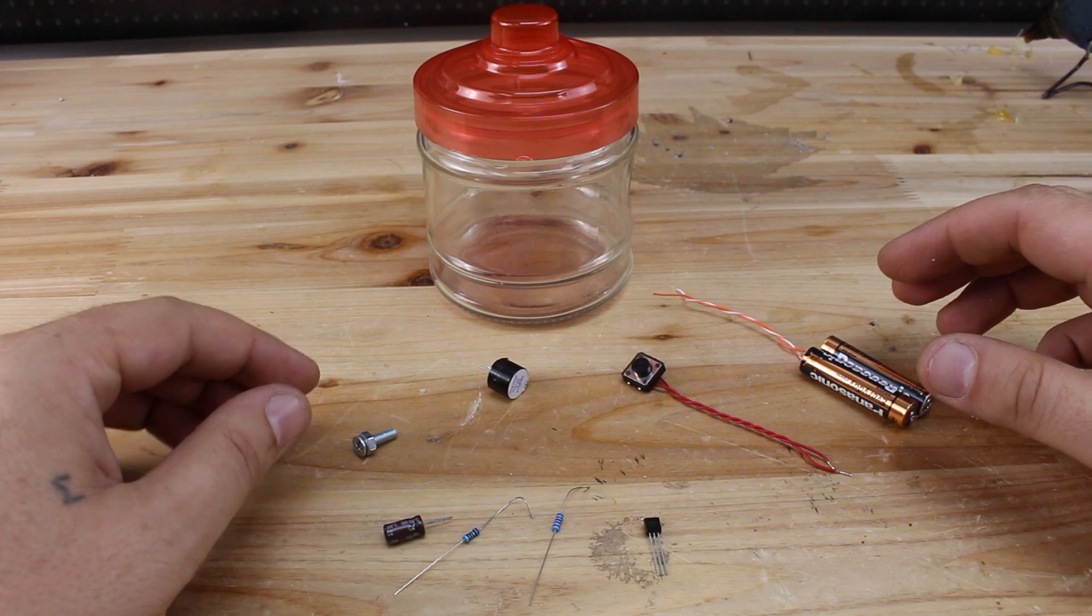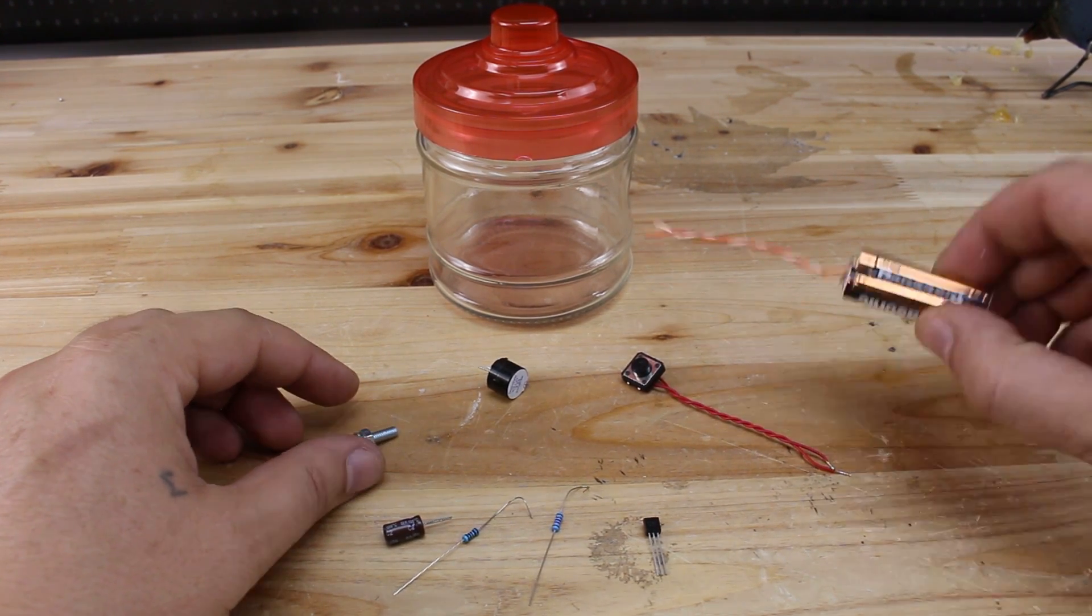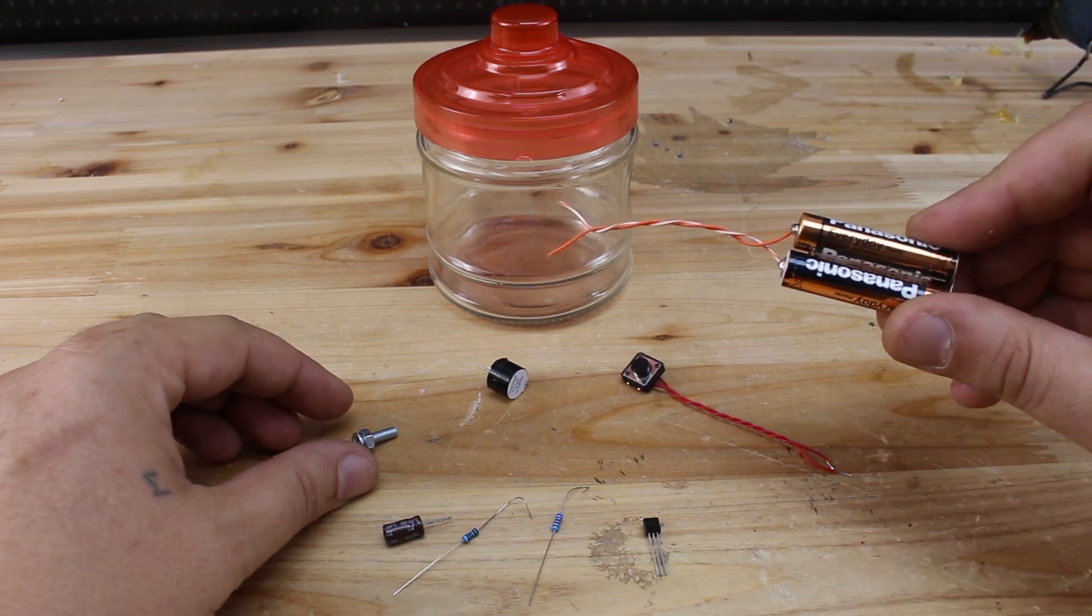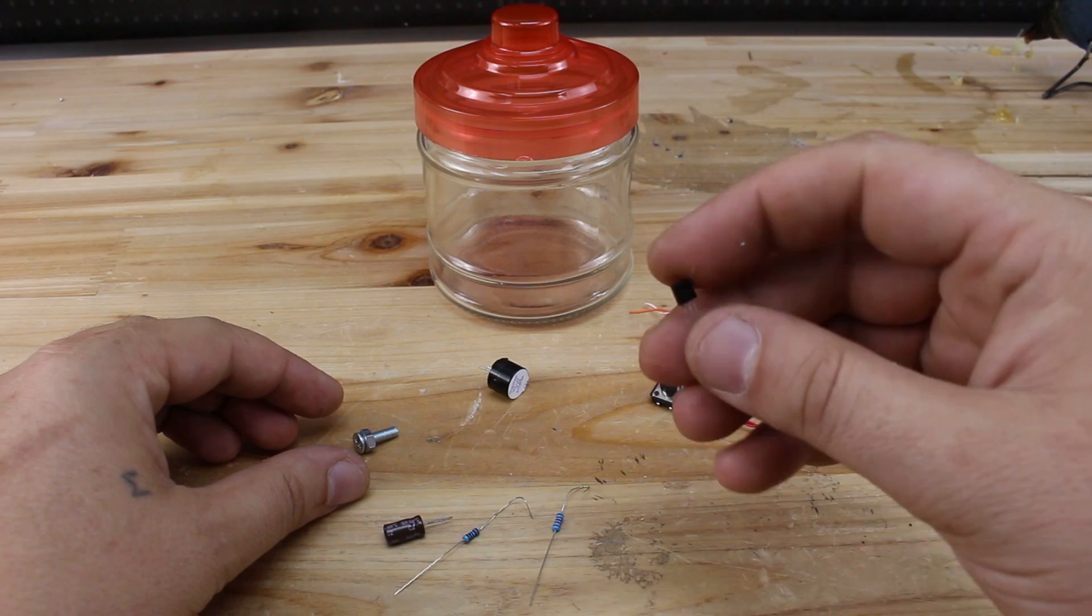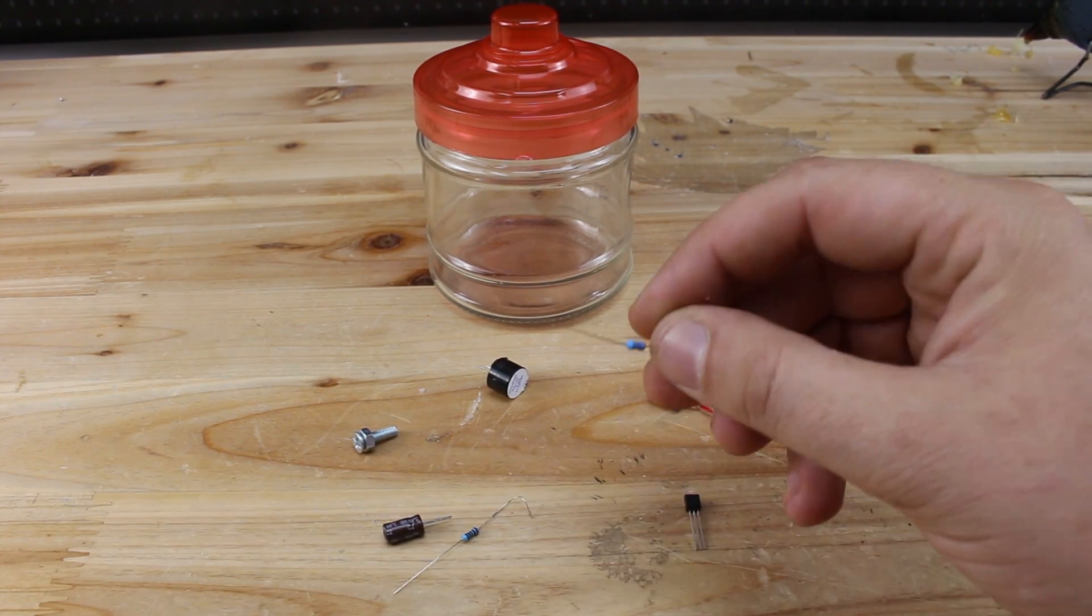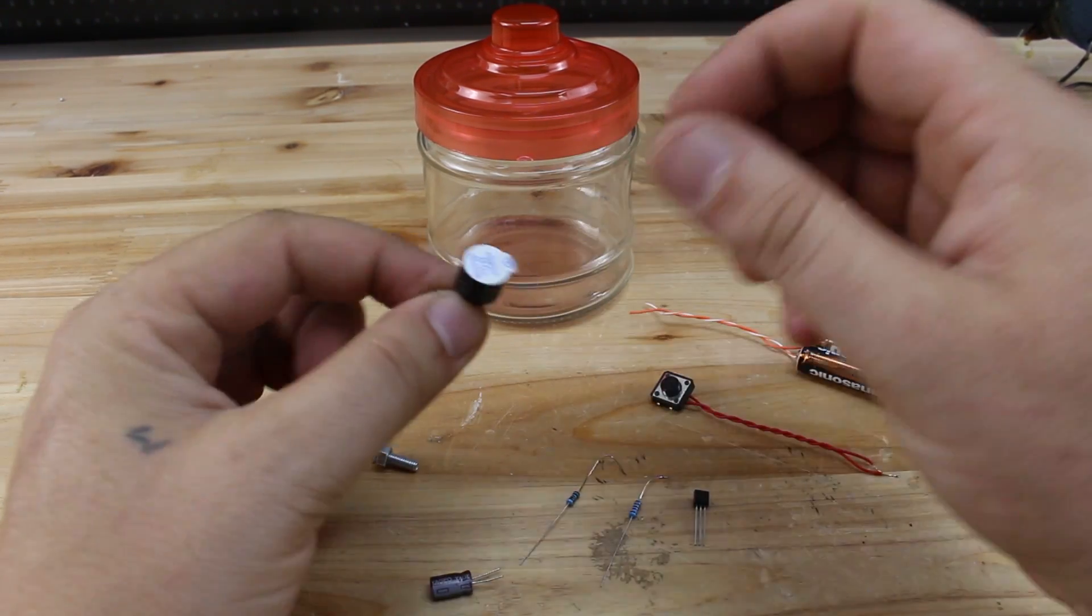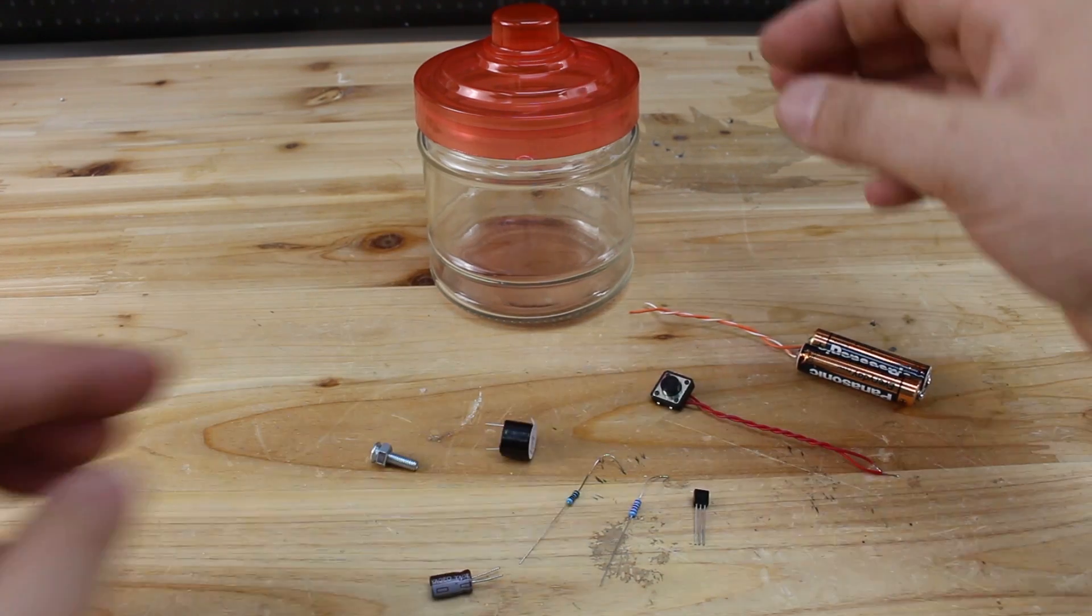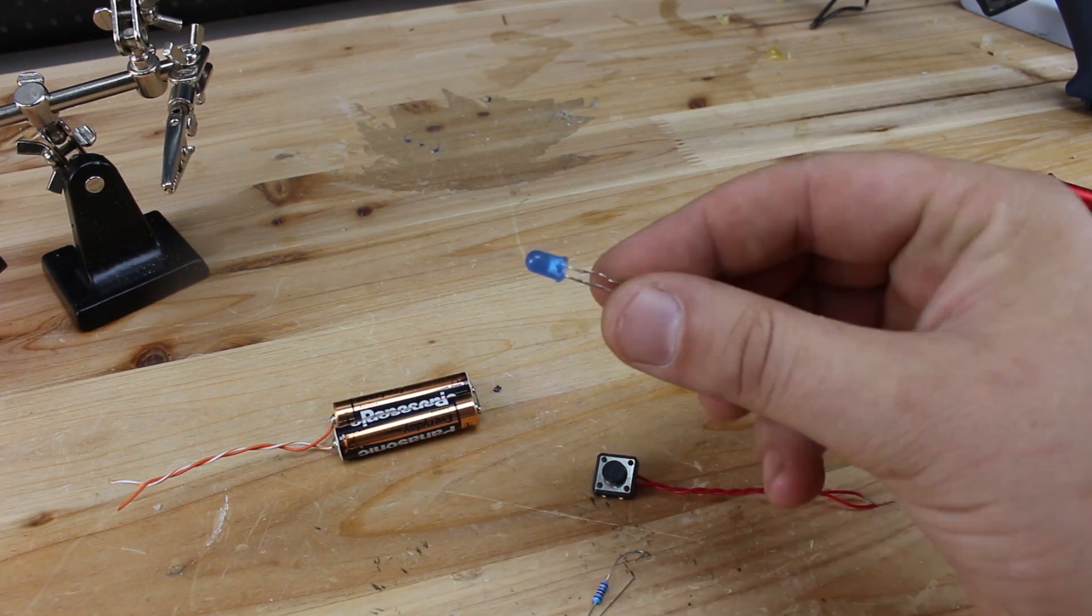For making this simple and basic earthquake alarm sensor, you will need two AAA batteries that give three volts, a push switch, transistor BC517, one 100 kilohm resistor, metal bolt, piezo, glass jar, and one LED.